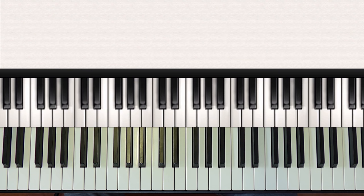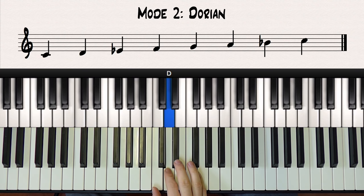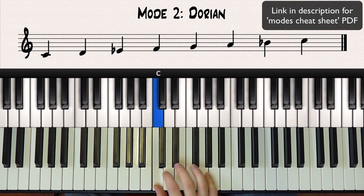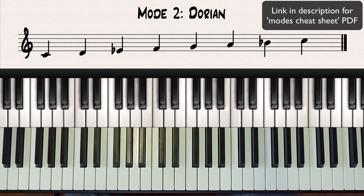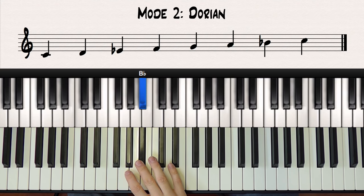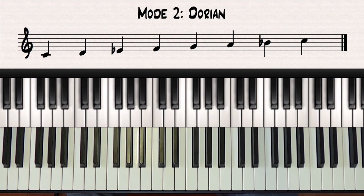Moving on to mode two, this is called the Dorian mode. To get this scale there are basically two ways to think about it. The first way is just to think of it as a C major scale with a flatted third and seventh. The other way is to ask yourself what major scale has C as its second note, and the answer is B flat major.